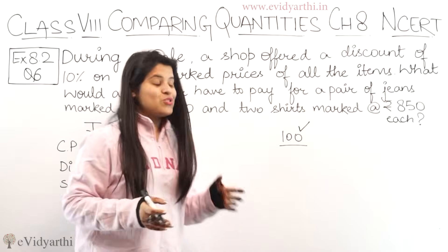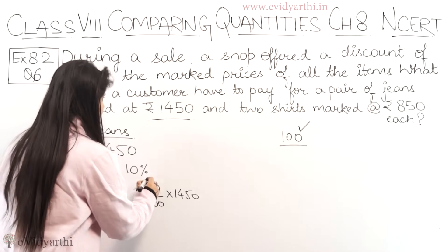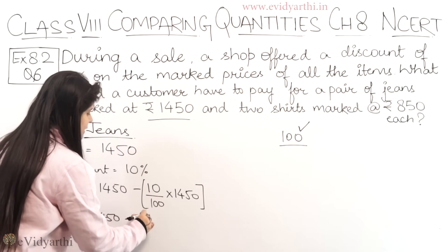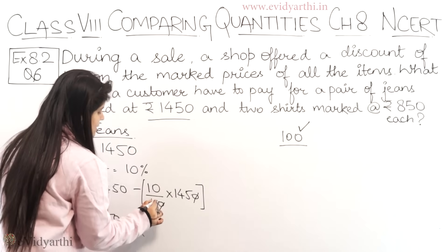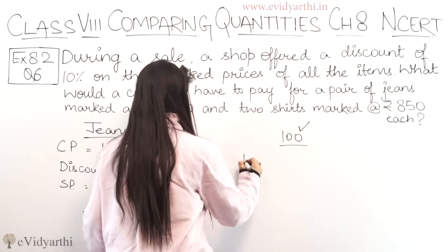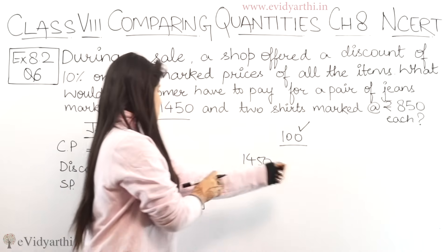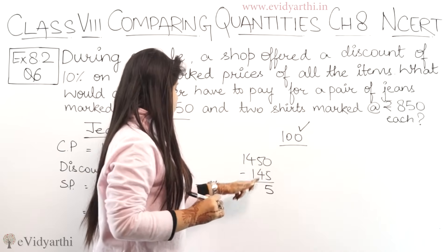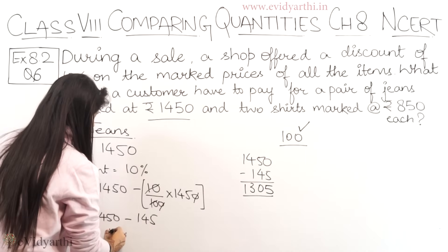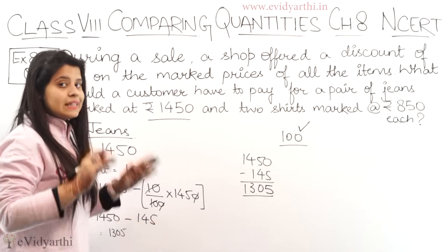The discount is on the original amount, which is 1450. So we solve: 1450 minus 10% of 1450. Cancelling zeros, 10% of 1450 equals 145. So we get 1450 minus 145. Subtracting: 5, 0, and 4 minus 1 is 3, giving us 1305. So a pair of jeans will cost rupees 1305 after discount.